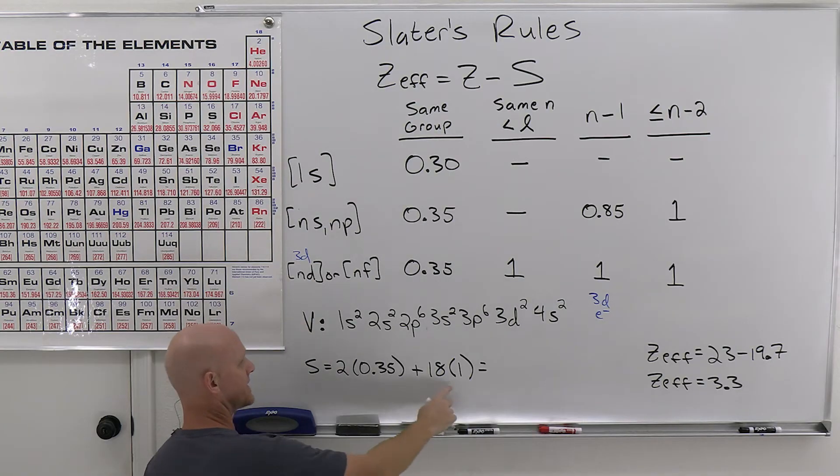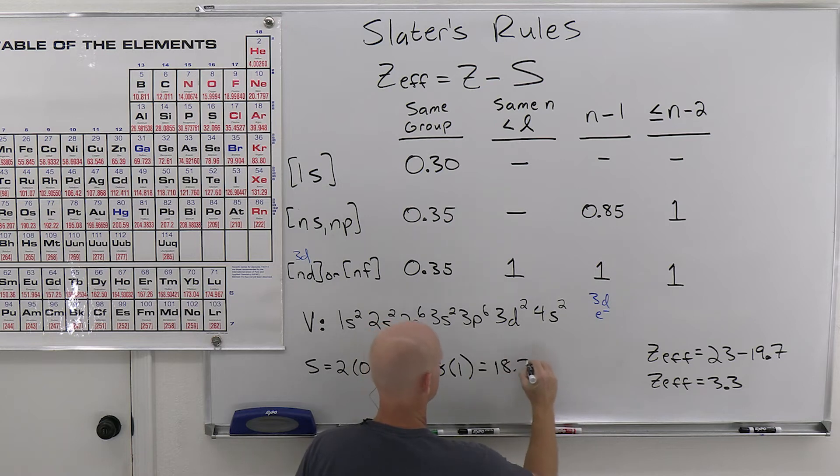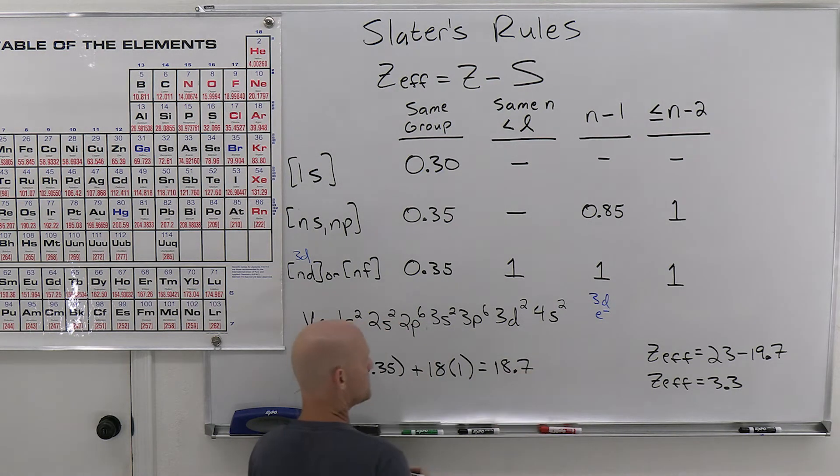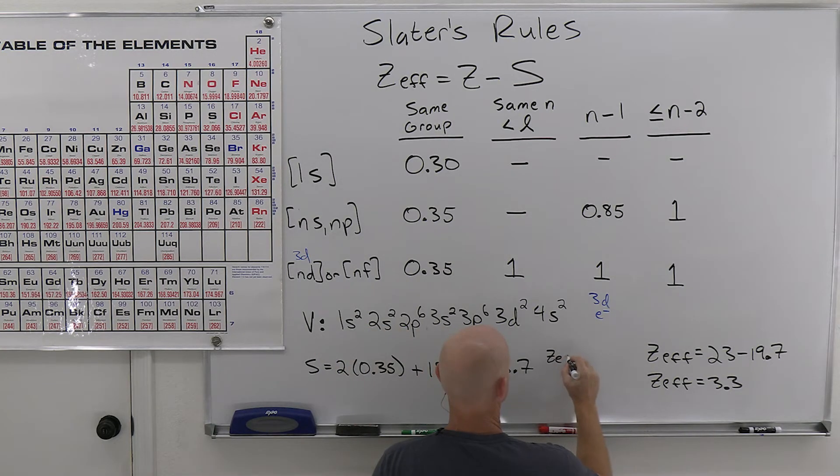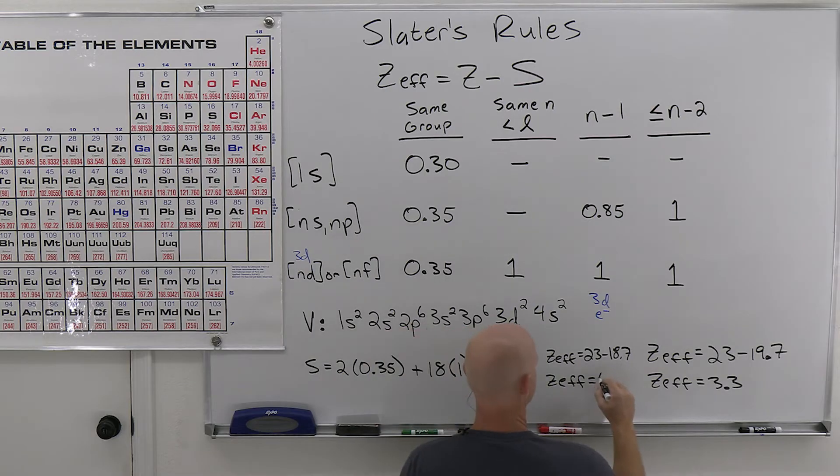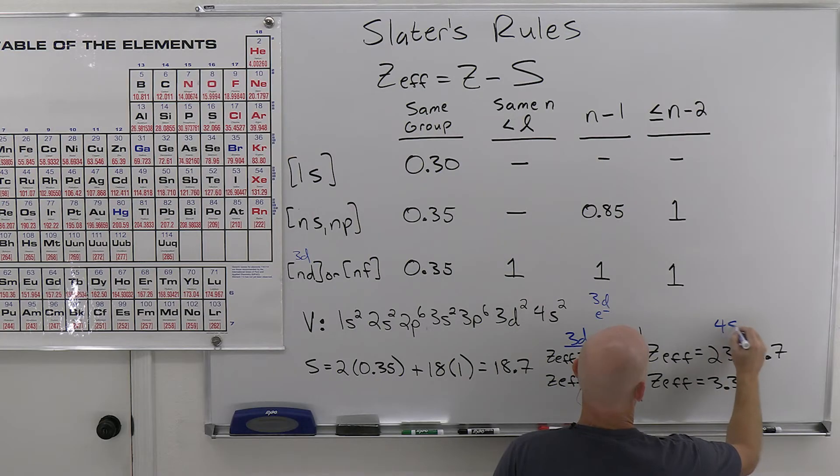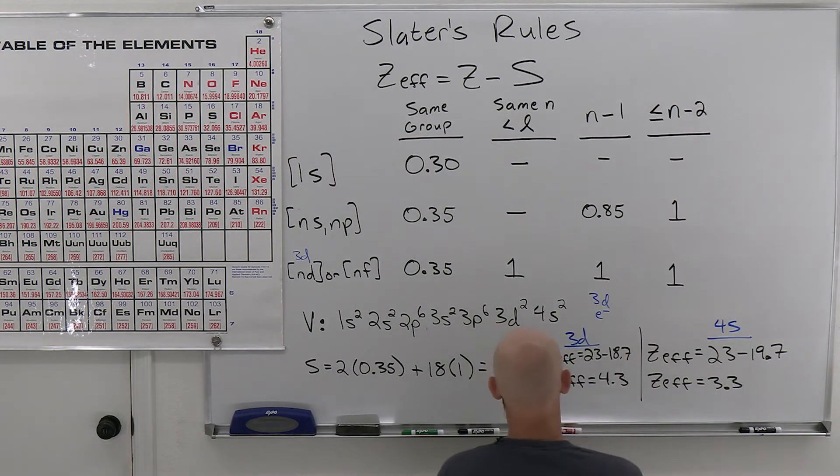So in this case, we don't even need the calculator here, 18 plus 2 times 0.35 is 0.7, so 18.7. And so now if we go to calculate our effective nuclear charge, we'll get 23 minus 18.7. So in this case, we're going to get 4.3.